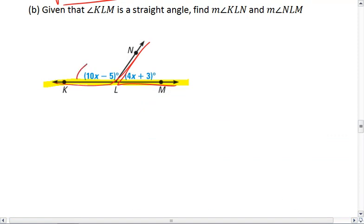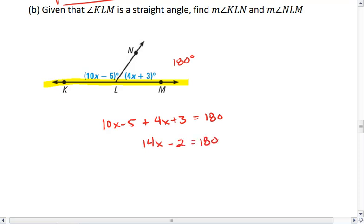That it's a straight angle tells us the entire angle is 180 degrees. We do have a shared side, so we can add the two smaller angles together. 10X minus 5 plus 4X plus 3 is going to equal 180. We get 14X minus 2 equals 180. This means that 14X equals 182. X equals 13. We can then plug this in to find the measure of angle KLN, which will equal 10 times 13 minus 5, and that reduces to 125 degrees.